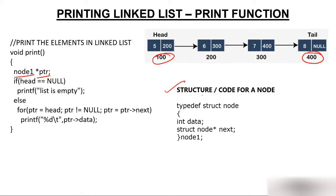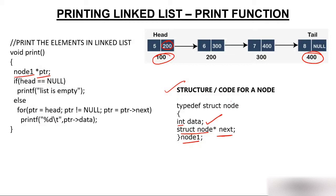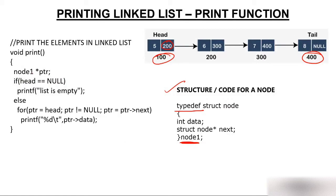The address field is not a simple address — its data type is the structure itself, because it keeps the address of a node which is itself composed of two parts: data and address. That's why we created a pointer of type struct node named 'next'. We type-defined this structure and gave it the name node1, so instead of writing 'struct node' every time, we can just use 'node1'. Now in the print function, we create a pointer 'ptr' of node1 type.